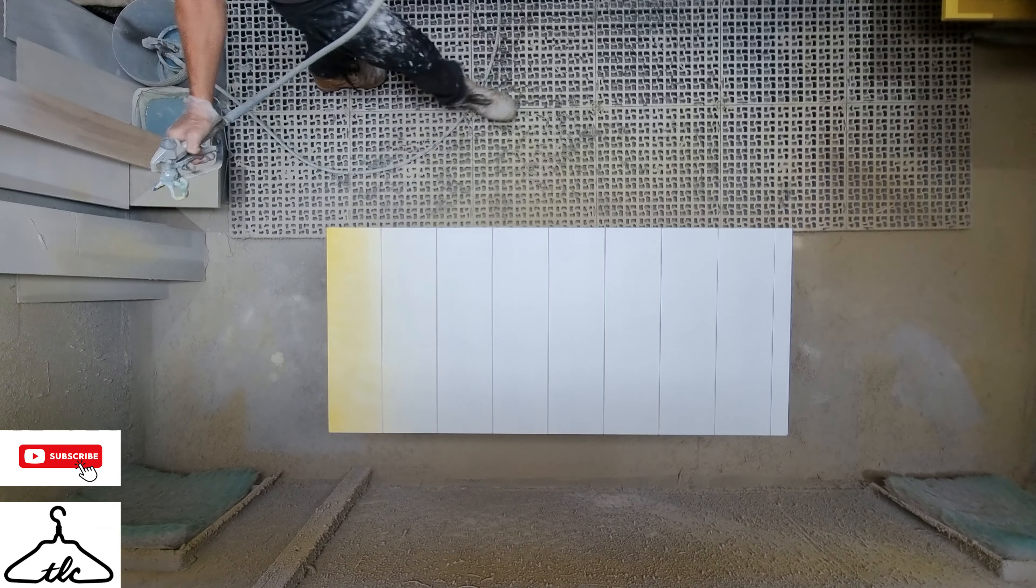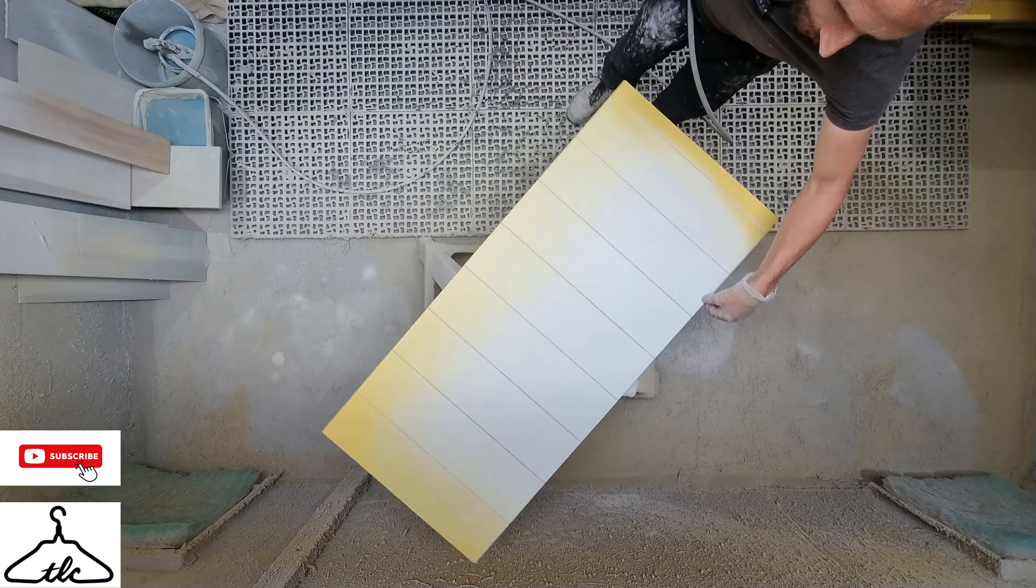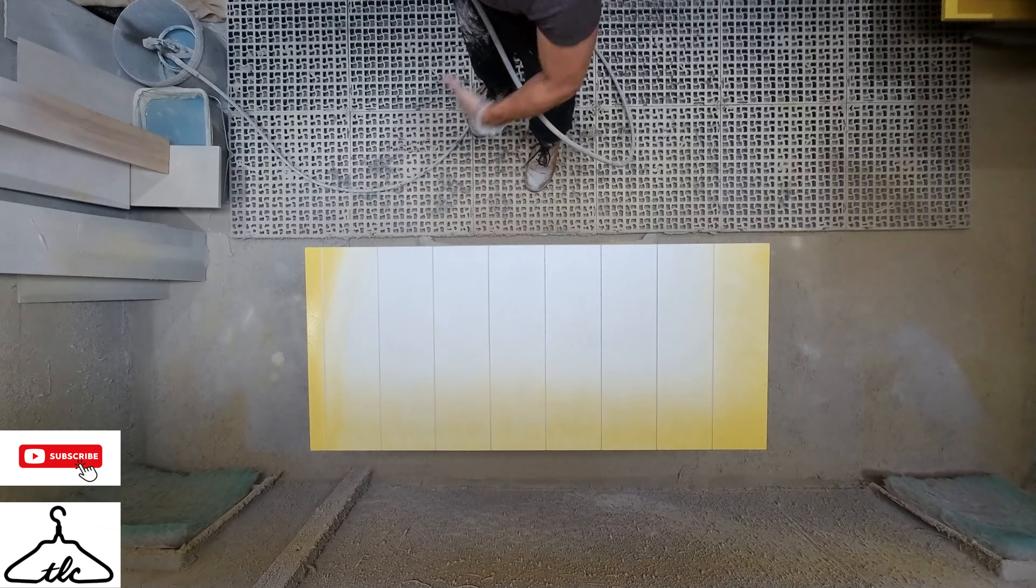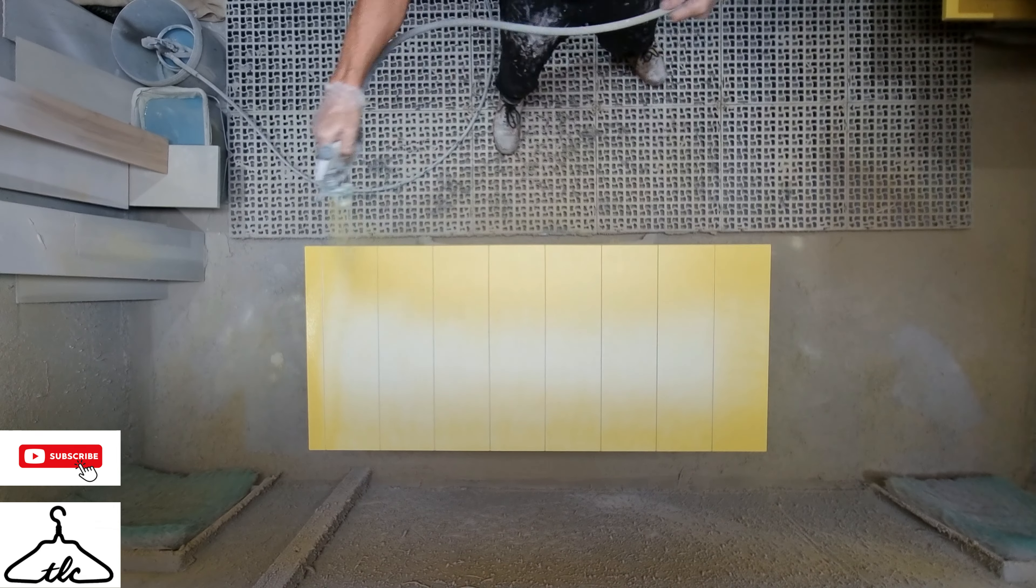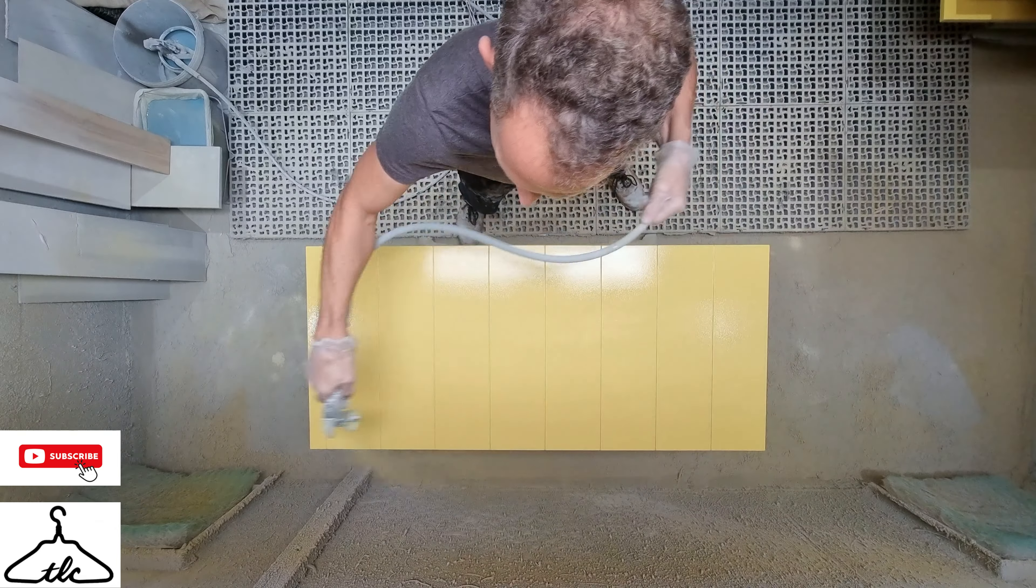Welcome. Today I'm going to be spraying this bulkhead door and five long doors. We're going for the yellow color. These doors have got plank effects on them, so let's go ahead and start spraying.